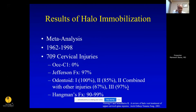A meta-analysis of upper cervical injury treatment shows 90 to 100 percent of upper cervical injuries will heal in a halo. The one we always discuss is Type 2 odontoid fractures, where the non-union rate can be anywhere from 15 to 40 percent depending on the study.